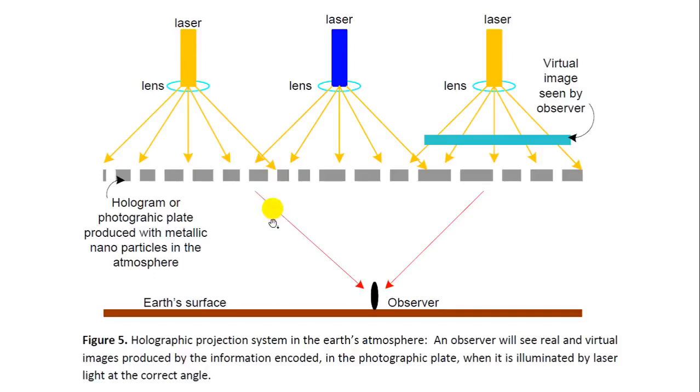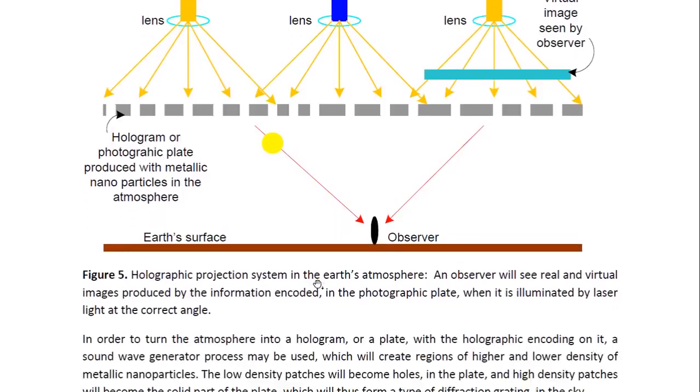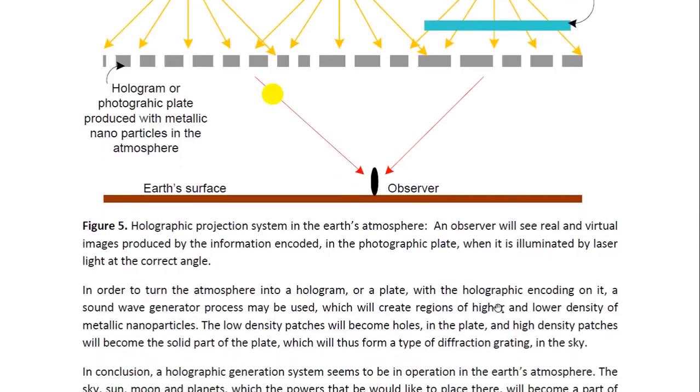There will be real images and there will be virtual images. The virtual images are seen at higher altitude. The real images are seen at lower altitudes and basically the sky's the limit with this kind of technology. They can produce anything they want.